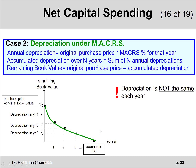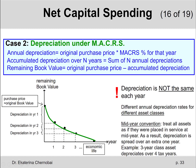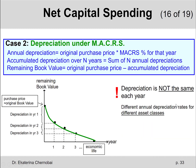So we don't get a straight line between the remaining book value points for each year — we get a curve. It's steeper in the beginning and then gets flatter and flatter. There are actually different asset classes, and they each have their own rule for how much value is lost every year.